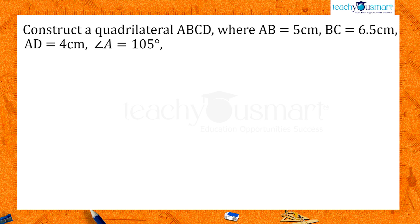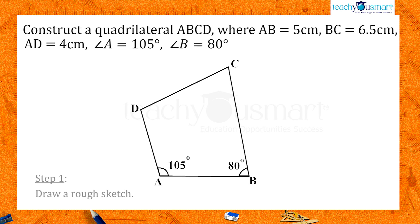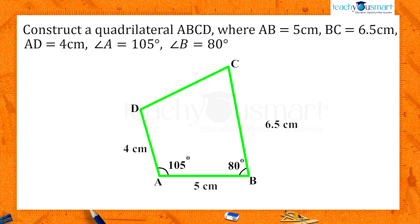We draw a rough sketch to get an idea of how we can start off. AB equals 5 centimeters, BC equals 6.5 centimeters, AD equals 4 centimeters, angle A equals 105 degrees, angle B equals 80 degrees.